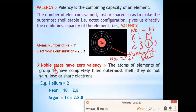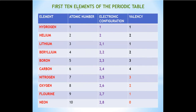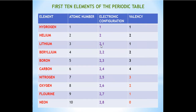Now let's discuss the valency of the first ten elements — hydrogen to neon, atomic numbers 1 to 10. Hydrogen: atomic number 1, electronic configuration 1. Helium: atomic number 2, electronic configuration 2. Lithium: atomic number 3, electronic configuration 2,1. Beryllium: atomic number 4, electronic configuration 2,2. In neon: two electrons in the K shell and eight in the L shell — electronic configuration 2,8.